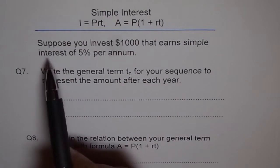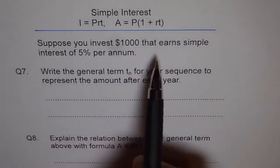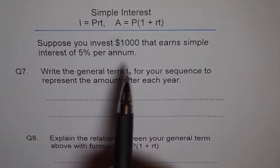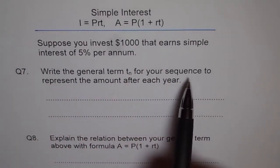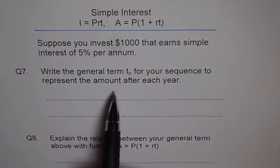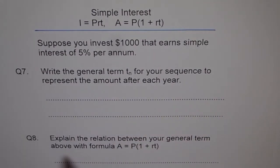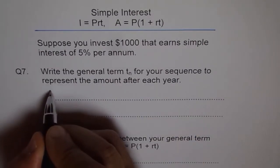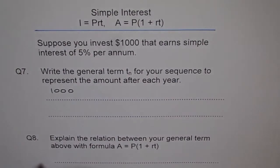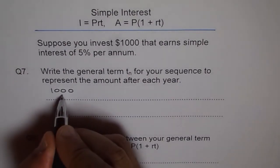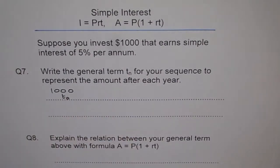So the case is: Suppose you invest $1000 that earns simple interest of 5% per annum. Then write general term tn for your sequence to represent the amount after each year. So with the examples one to six, you know that investment was $1000. So write $1000 as an investment. And let's call this as the term t₀. Now we invest, initial investment.